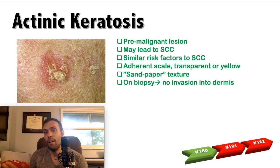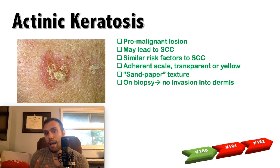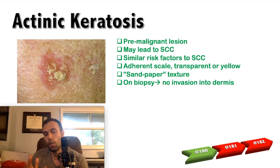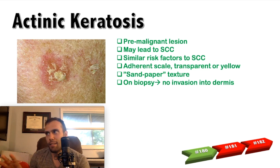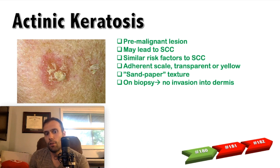Actinic keratosis is a pre-malignant lesion — we don't have squamous cell carcinoma yet, but it can lead to squamous cell carcinoma. On biopsy, there's no invasion into the dermis yet. Once we invade the dermis, then we're dealing with squamous cell carcinoma. Until dermis invasion occurs, it is not squamous cell carcinoma — it's a pre-malignant lesion. Classically, this is an older patient with a lot of sun exposure, described as an adherent scale with yellow crusting, very rough with a sandpaper texture. Risk factors are similar to basal and squamous cell carcinoma.